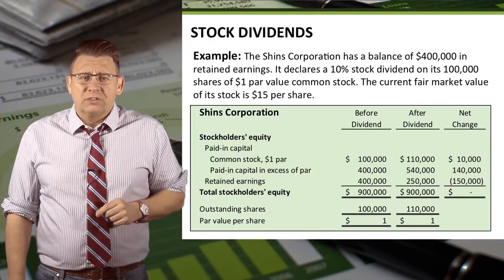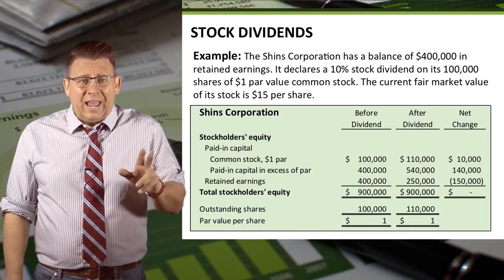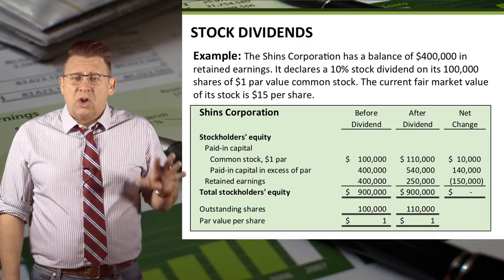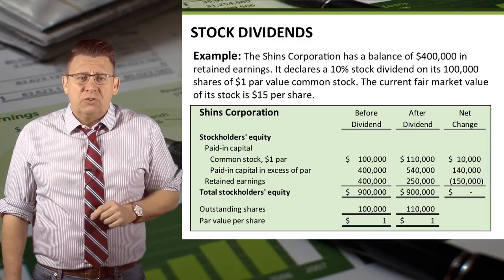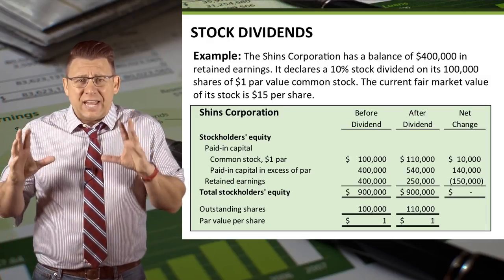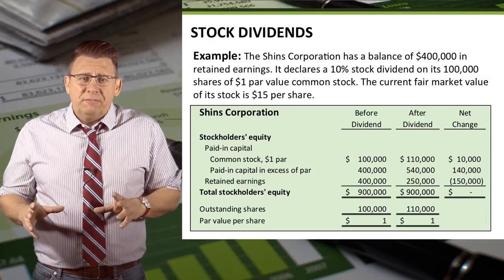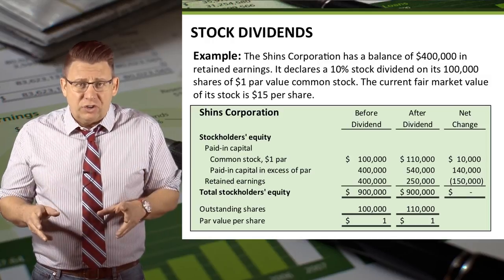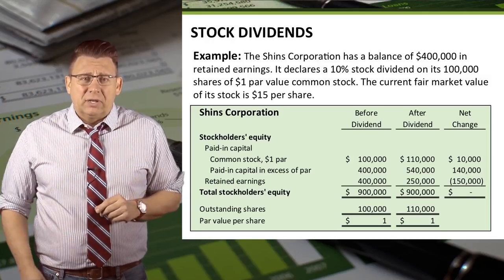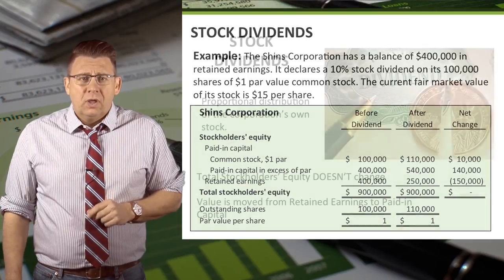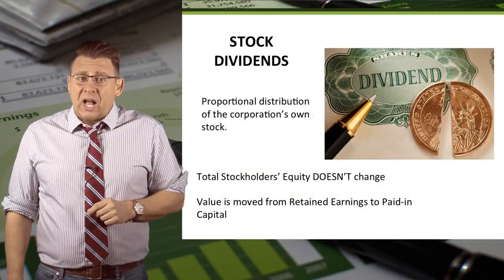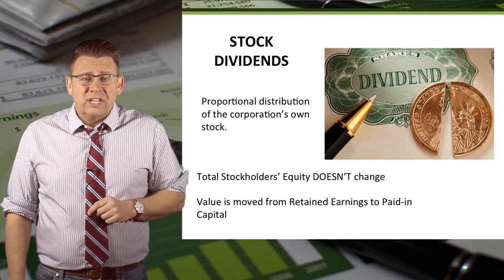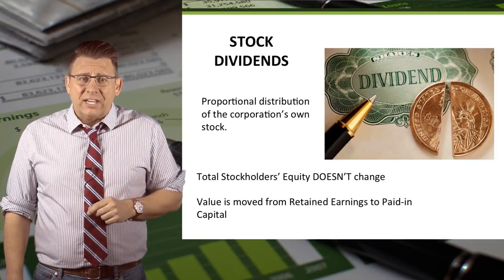Let's compare the stockholders' equity section before and after the stock dividend. Notice that total stockholders' equity is still $900,000. All that's happened is $150,000 of retained earnings has moved from that section to the paid-in capital section. So make sure you remember that stock dividends don't change total stockholders' equity like cash dividends do.